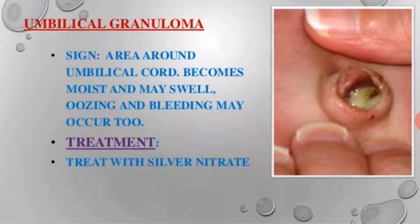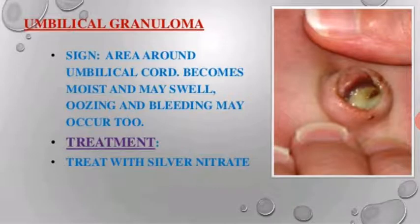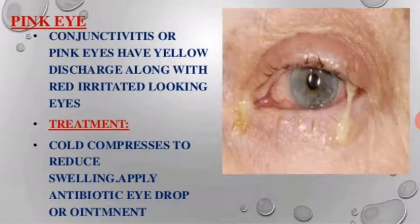Umbilical granuloma: the area around the umbilical cord becomes moist and may swell with oozing. Treatment: apply silver nitrate.